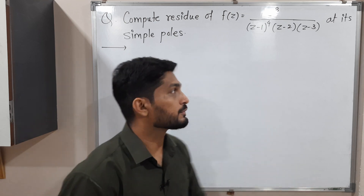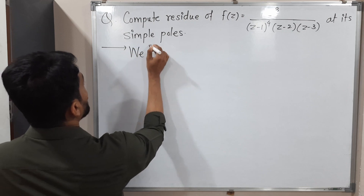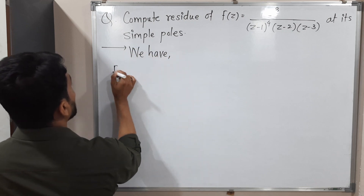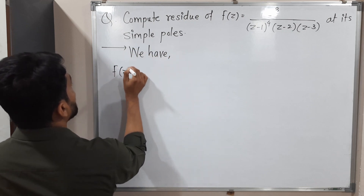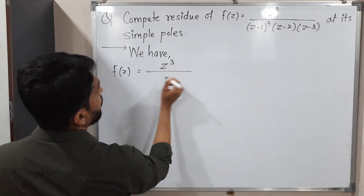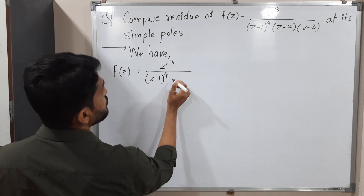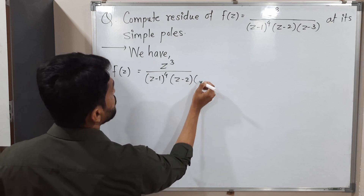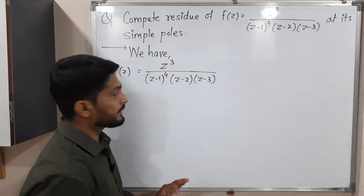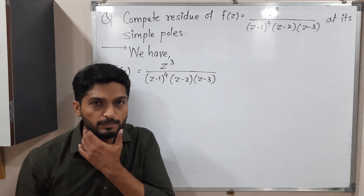So let me write the given function first. f of z is z cube upon z minus 1 raise to 4, z minus 2, z minus 3. So it is a very simple function, and easily we can find its poles.